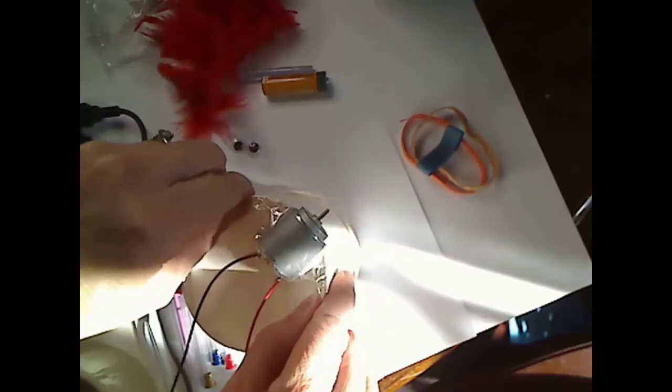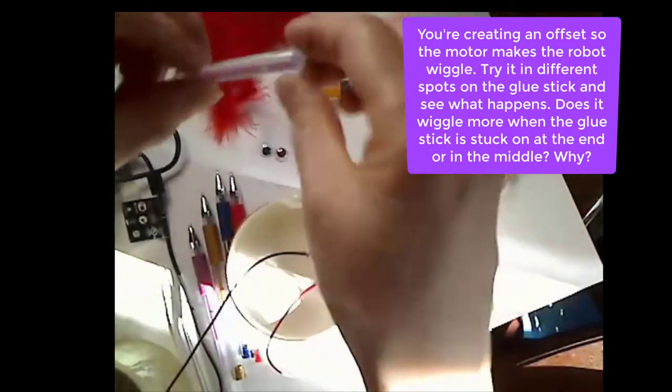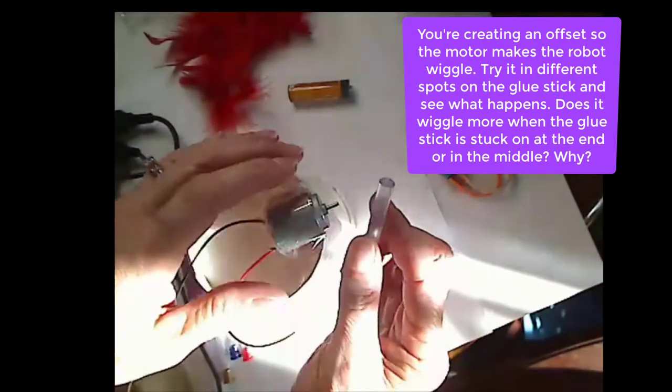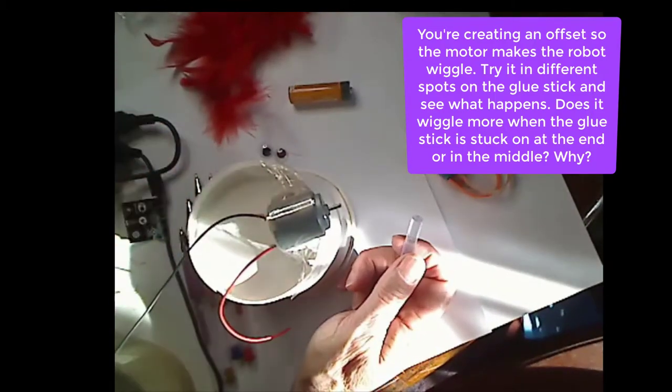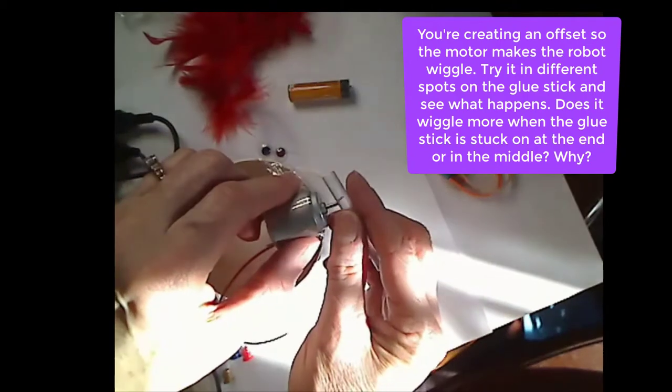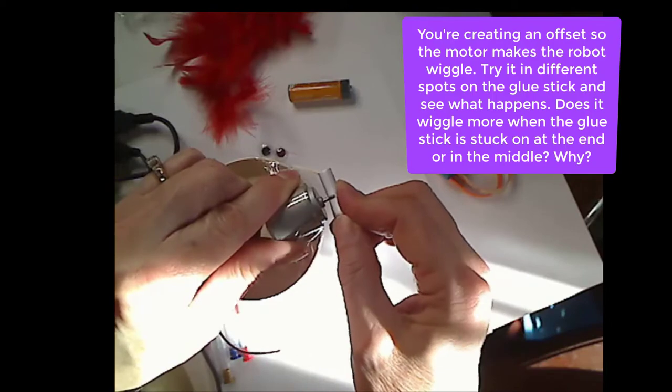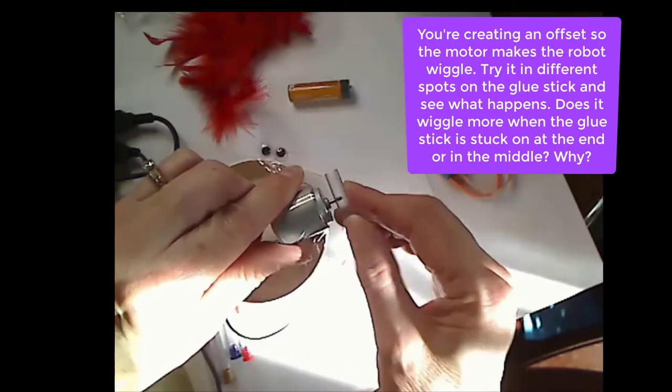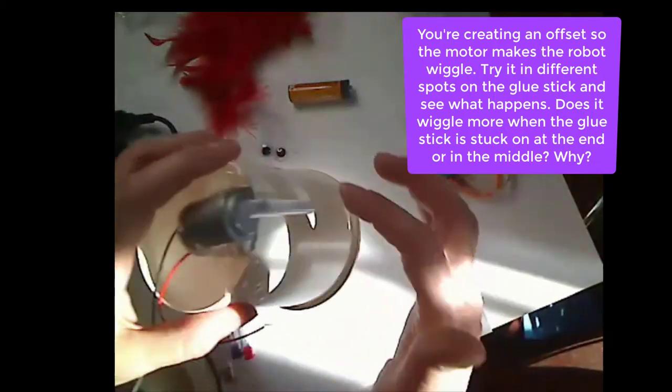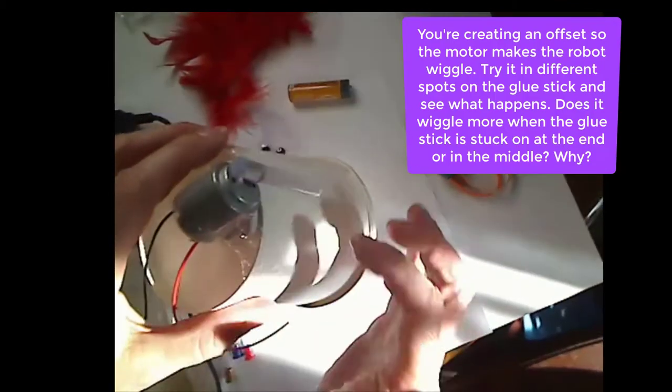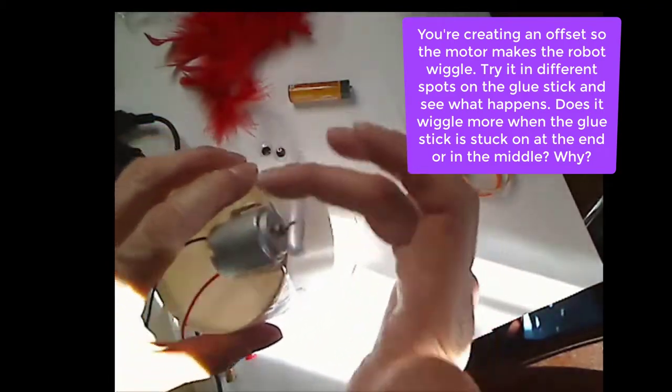So mine's taped on there pretty good. Then you want to take your piece of glue stick. You can try different things too - it doesn't have to be a glue stick. We provided you with a glue stick, but you could also use like a piece of eraser or some clay. You just need to attach something to the end of the motor here and you push that on. It's a little bit hard. Just push that on there to the end so it can go around in a circle like that. You don't want it hitting the edge. That's why we added the little block so that it wouldn't hit the edge of the cup, so it has to go freely.